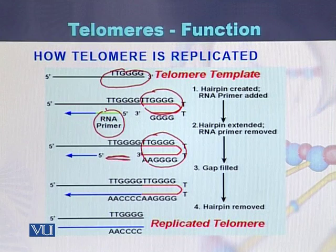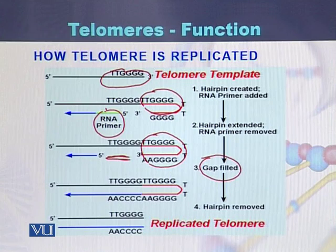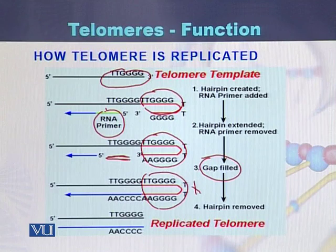During the third step, after the removal of the RNA primer, the gap is filled. During the fourth step, the hairpin is removed. Ultimately, the hairpin is removed and the DNA has been replicated, meaning the telomere of the chromosome has been successfully replicated.